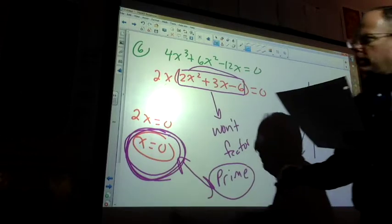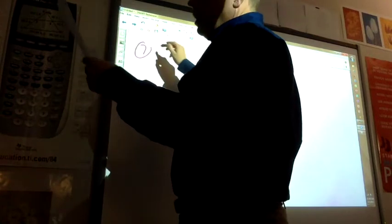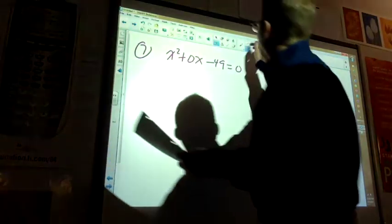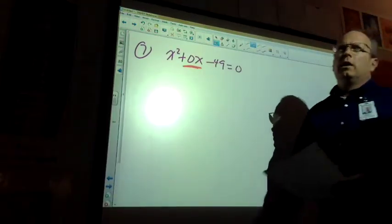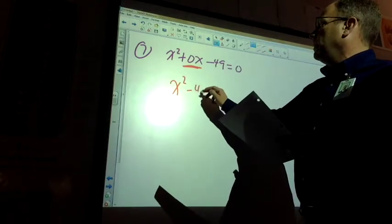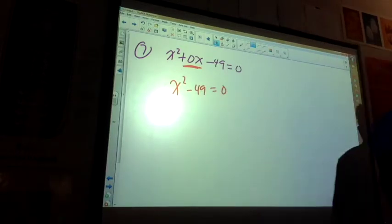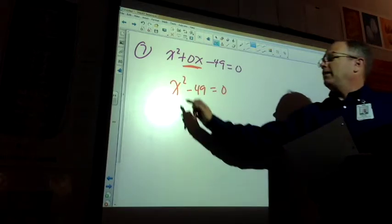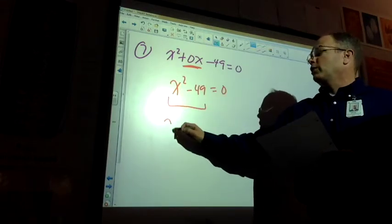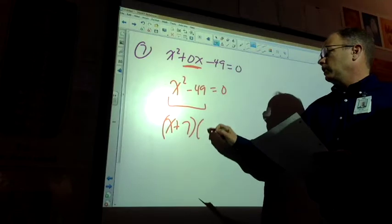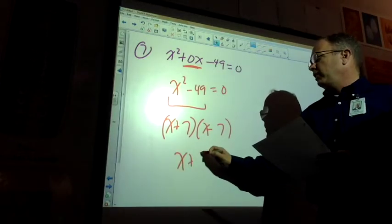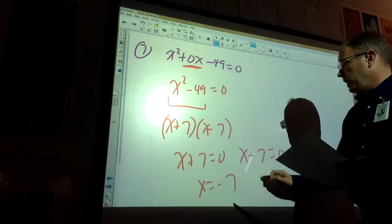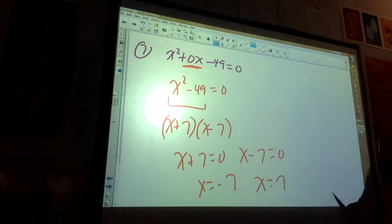Number 7 got goofed up a little bit and caused a smidge of panic. What can you do with this? Yeah, it's nothing. So I could rewrite the whole problem to be this. Where did the 0x go? Well, 0 times x is nothing. So I don't have to put it. Yeah, and then this becomes the difference of two squares, right? x plus 7, x minus 7. So I get x plus 7 equals 0, x minus 7 equals 0. So I find that x equals negative 7 and x equals positive 7. That's how it works out.